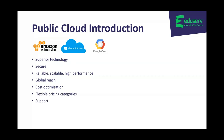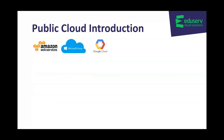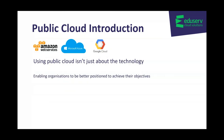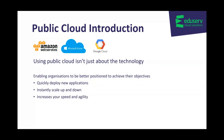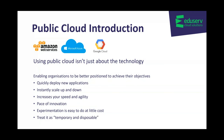Using public cloud isn't just about the technology. It's enabling organizations to be better positioned to achieve their objectives. You're able to quickly deploy new applications, instantly scale up and down, increasing your speed and agility. You benefit from the pace of innovation, so experimentation is easy to do at little cost, allowing businesses to change course quickly. You can treat infrastructure as temporary and disposable, which is something you wouldn't consider when investing in your own infrastructure.